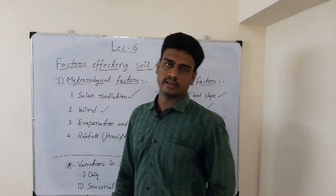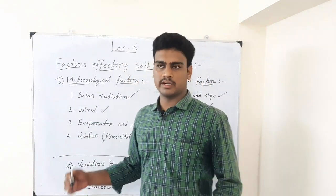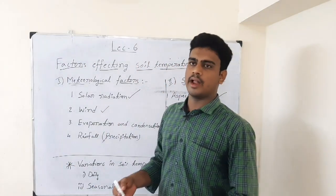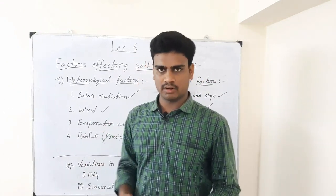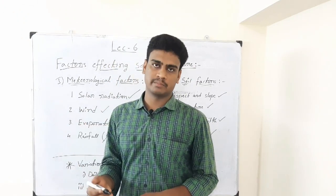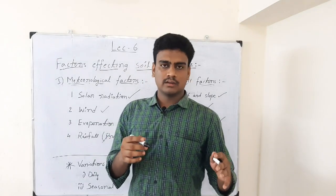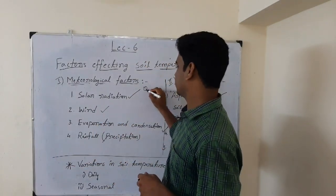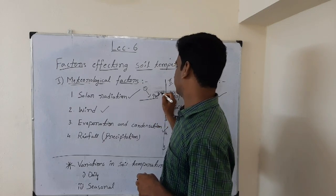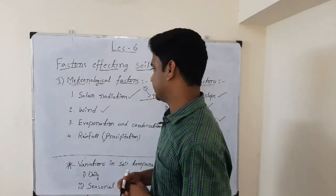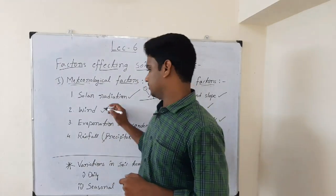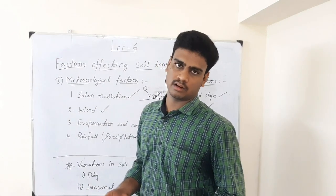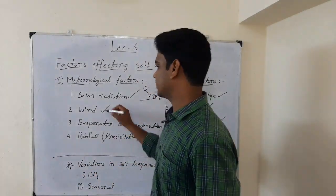The first meteorological factor is solar radiation - the heat and light emitted from the Sun. The incoming solar radiation hits the soil and heats it up immediately. When we compare air temperature and soil temperature, air temperature takes some time to heat up, but soil shows immediate changes when struck by solar radiation. Soil has high absorptive capacity for heat. This heat affects the crop either positively or negatively - optimum temperature helps the crop, while temperatures above or below that range cause harm.